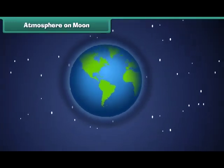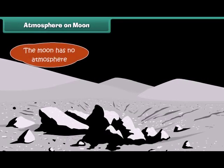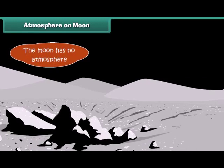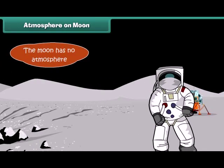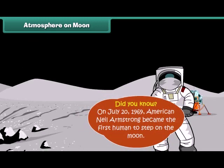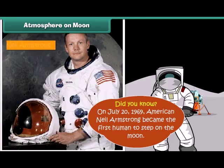Unlike earth, the moon has no atmosphere due to which the sky always appears dark even on the bright side. Also there can be no sound transmission on the moon since sound waves travel through air and the moon has no air. Did you know, on July 20, 1969, American Neil Armstrong became the first human to step on the moon.